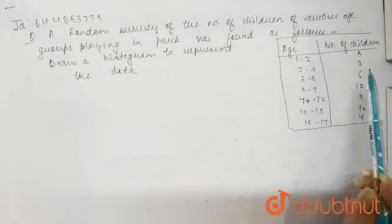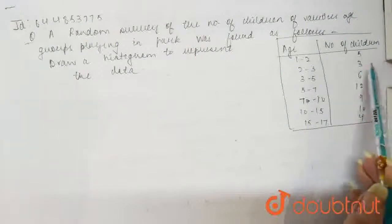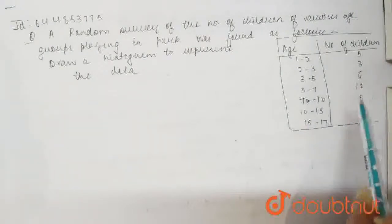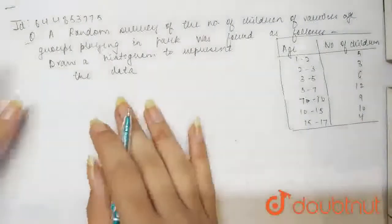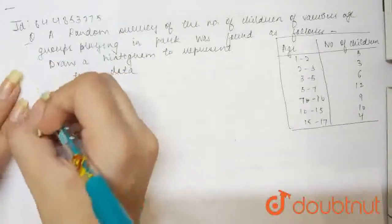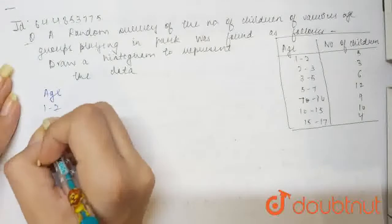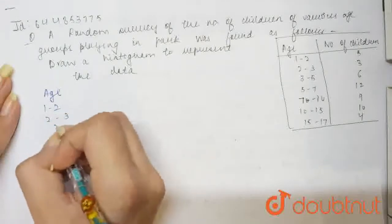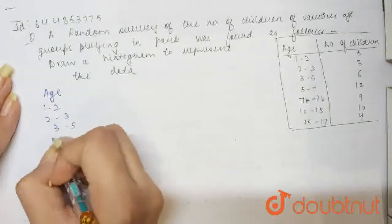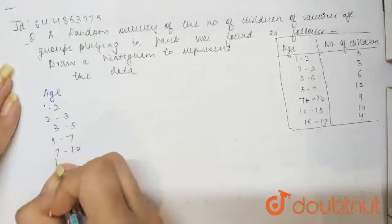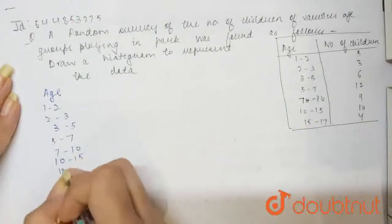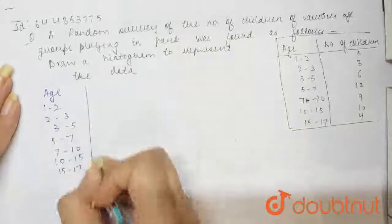Now what we will do, we will redraw this table. So here we are given age. Age is 1 to 2, then 2 to 3, 3 to 5, 5 to 7, 7 to 10, 10 to 15, then we have 15 to 17.